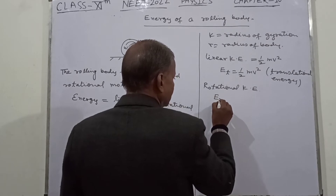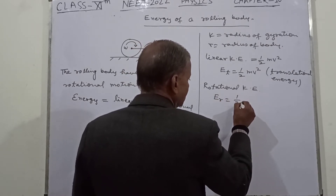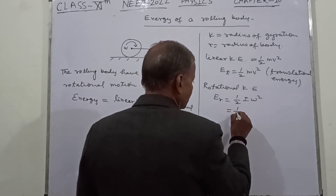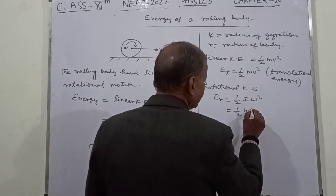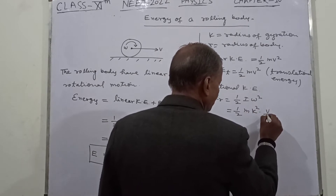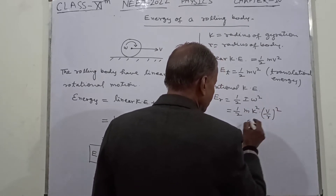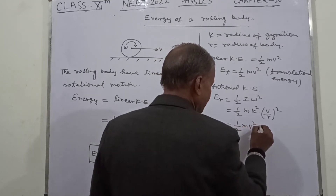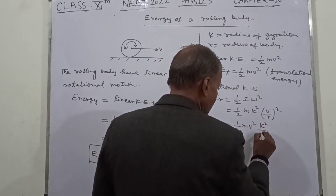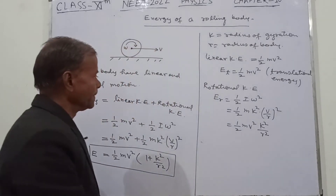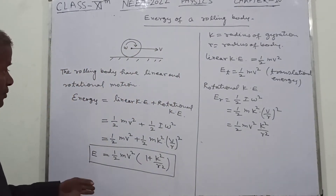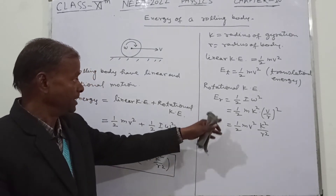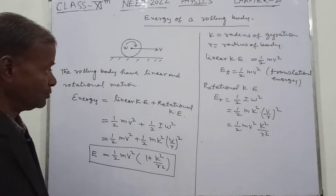The rotational kinetic energy E_R equals one-half Iω², which equals one-half M k² (v/r)². This simplifies to one-half mv² multiplied by k²/r². From this, we can take the ratio to find what percentage of total energy E is rotational.